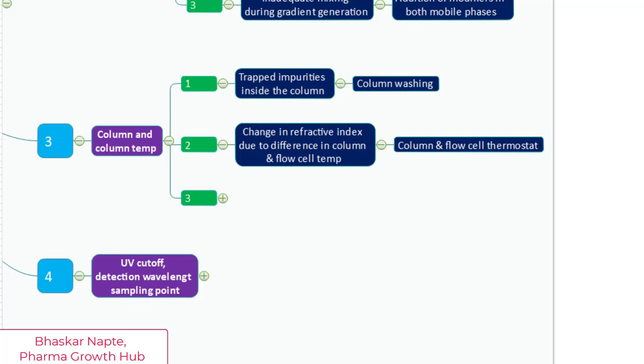You can also think of using a thermostat for the flow cell also. There are manufacturers available where you will get the thermostat for the detector so that you can maintain the temperature of the flow cell too. The lower the temperature difference between the solvent coming inside the flow cell and the flow cell itself, lower will be the impact because of this refractive index change.